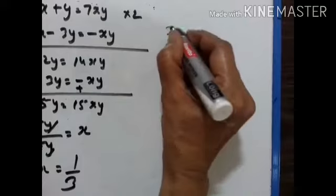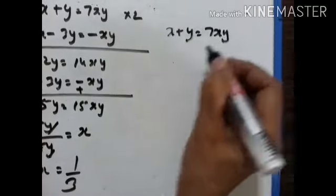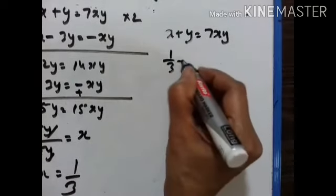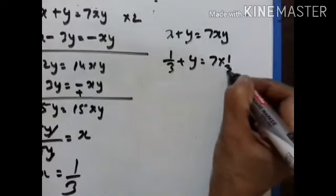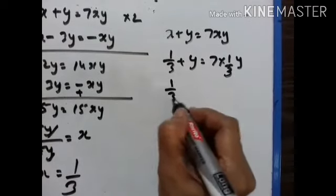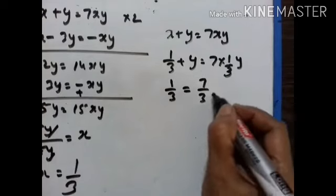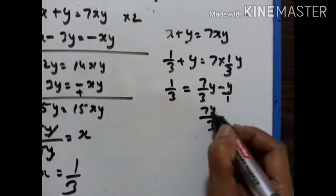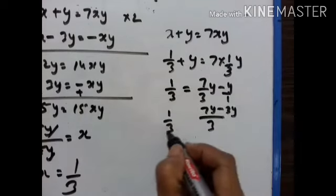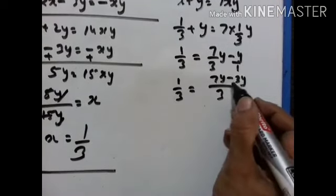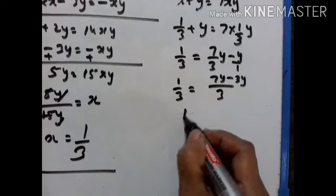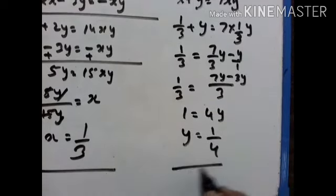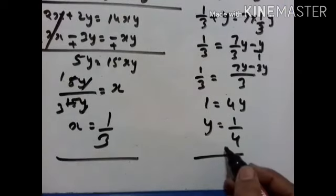So x equals 1 upon 3. Substituting into the first equation x plus y equals 7xy: 1 upon 3 plus y equals 7 times (1 upon 3) times y. So 1 upon 3 equals 7 upon 3y minus y. Taking LCM of 3: 1 upon 3 equals (7y minus 3y) upon 3y, which is 4y upon 3y. Therefore 1 equals 4y, so y equals 1 upon 4. Hence x equals 1 upon 3 and y equals 1 upon 4.